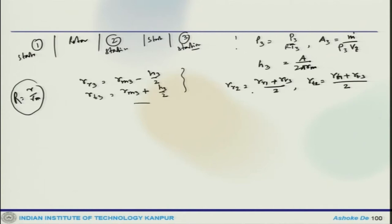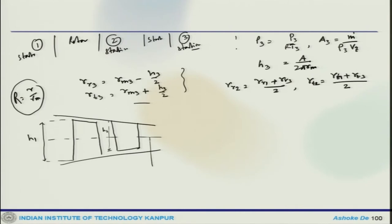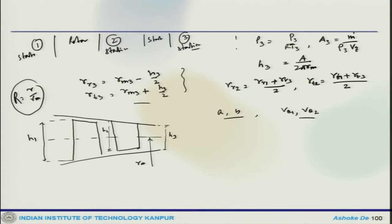Thinking about the cross-section, we have the mean section with dimensions H1, H2, Rm, and H3. Once we obtain constants A and B, we can get V-theta-1 and V-theta-2. The axial velocities can also be calculated using this information.